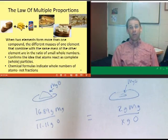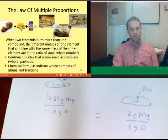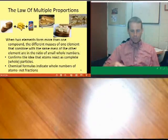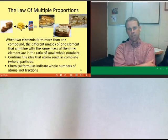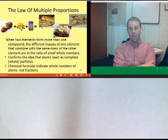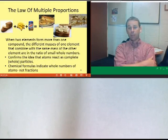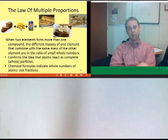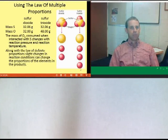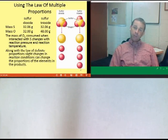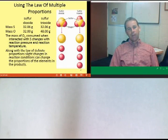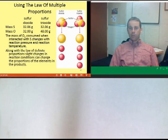There's also a law of multiple proportions: if you change the reaction conditions, sometimes you get different products. For example, combining sulfur and oxygen under certain conditions gives SO2; under different conditions, you get SO3. The law says that changing reaction conditions can provide different proportions and different products.